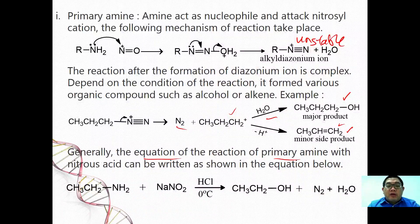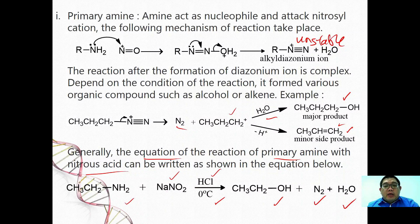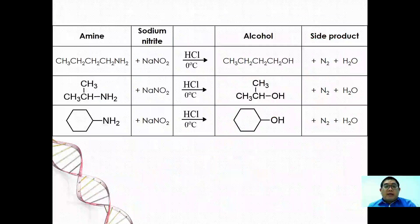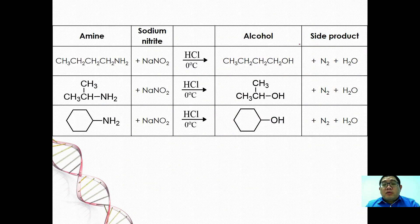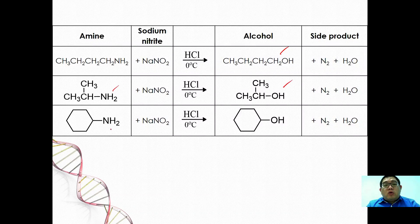That is why in some exam answer choices you may see an alkene as an option. Generally, the equation for the reaction of a primary alkylamine with nitrous acid can be written as: ethanamine reacts with sodium nitrite in hydrochloric acid at 0 to 5 degrees Celsius to form alcohol plus nitrogen plus water. More examples: butan-1-amine forms butan-1-ol; propan-2-amine forms propan-2-ol; cyclohexanamine forms cyclohexanol. These are the three reactions of amine.